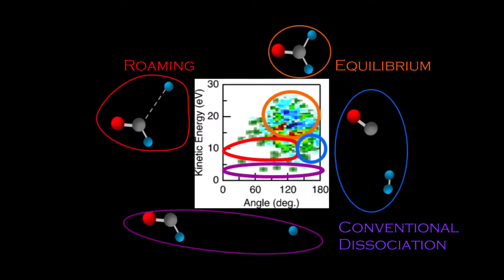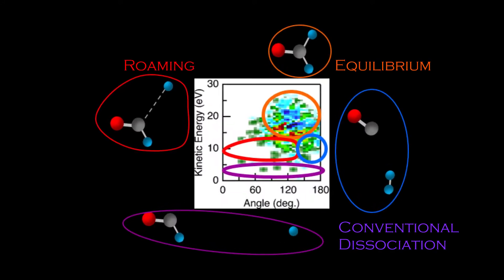Our experimental observable shows the conventional dissociation at the bottom and right. Roaming is indicated in red.